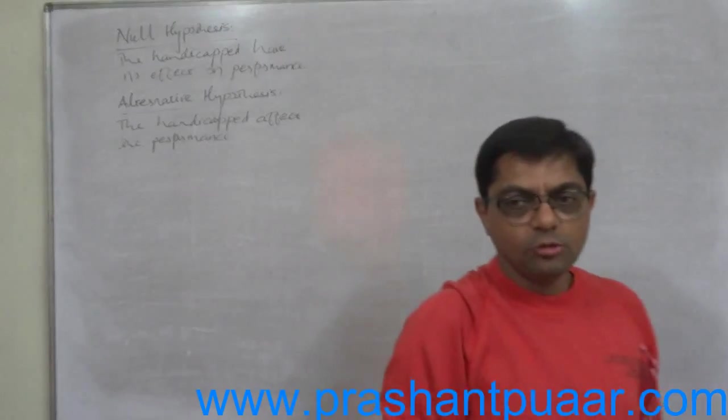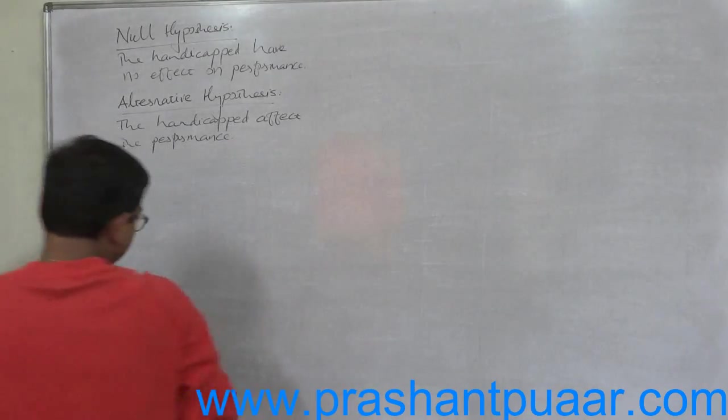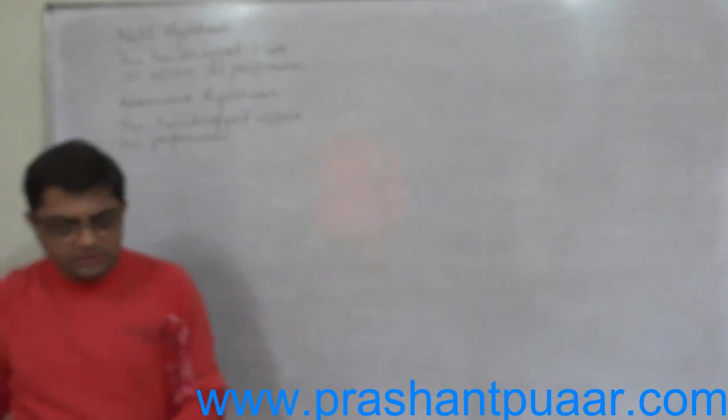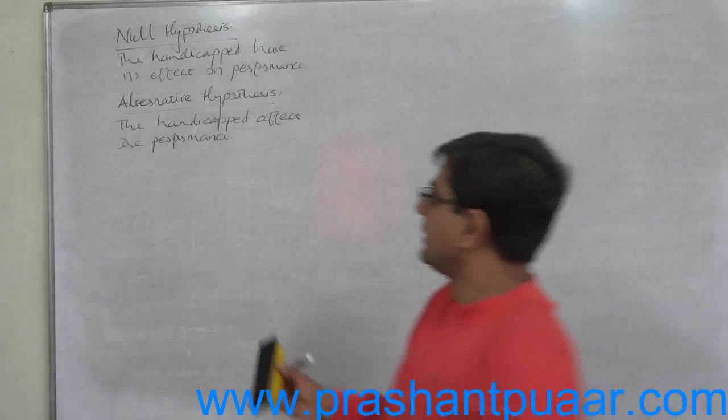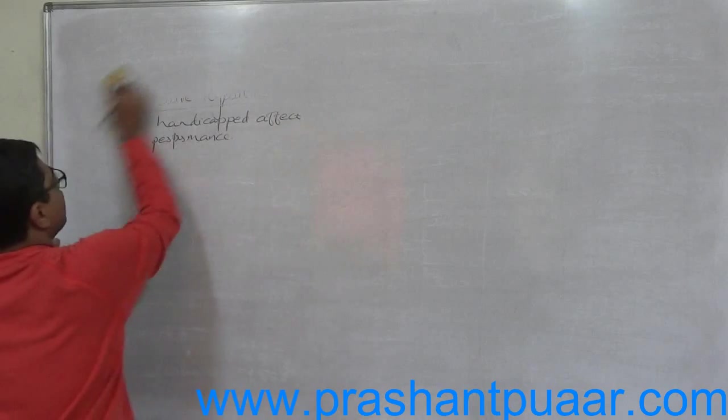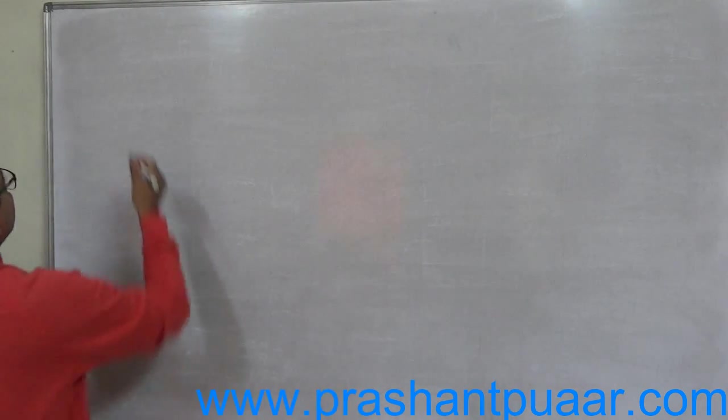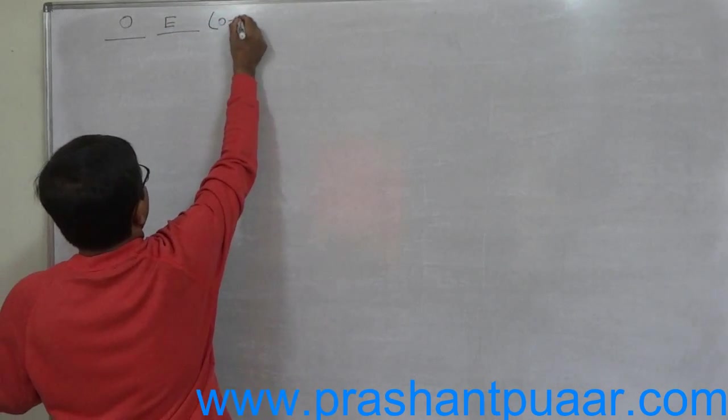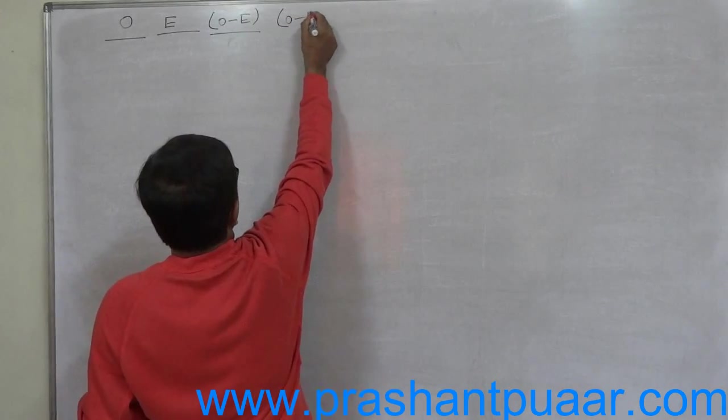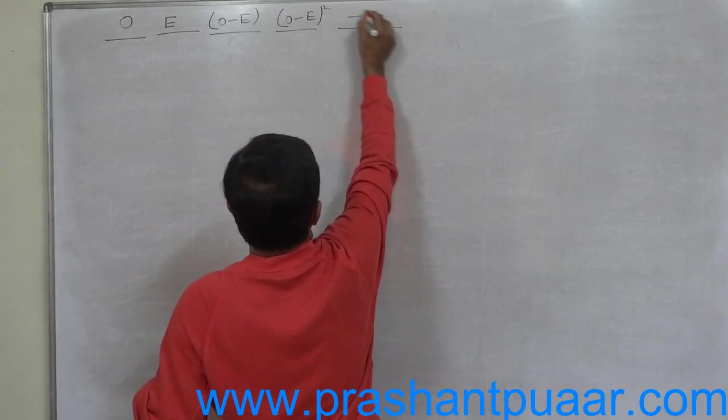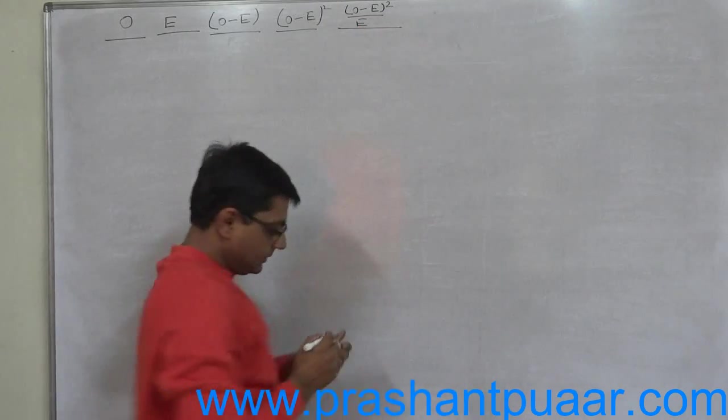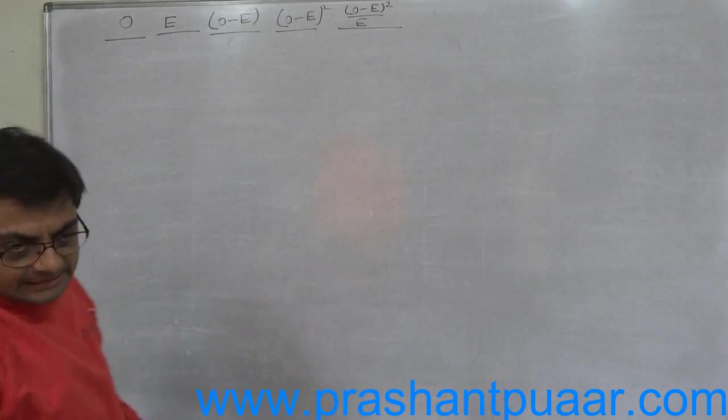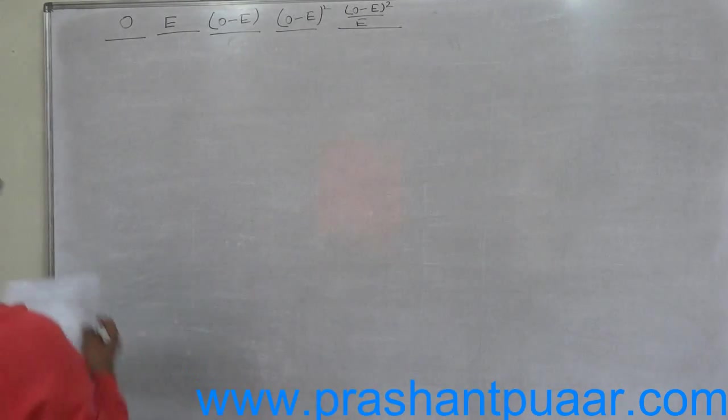Now what? The next part is the calculation of test statistic, that is chi-square. First time in this chapter, we are not going to use directly any formula. We are going to use a formula but the calculations will be in the form of a table. First is O, that means observed frequency. Second is E, that is expected frequency. Third column is O minus E. Fourth column is O minus E whole square, and the last fifth column is O minus E whole square divided by E. The summation of this last column is chi-square. That means chi-square is sigma O minus E whole square divided by E.